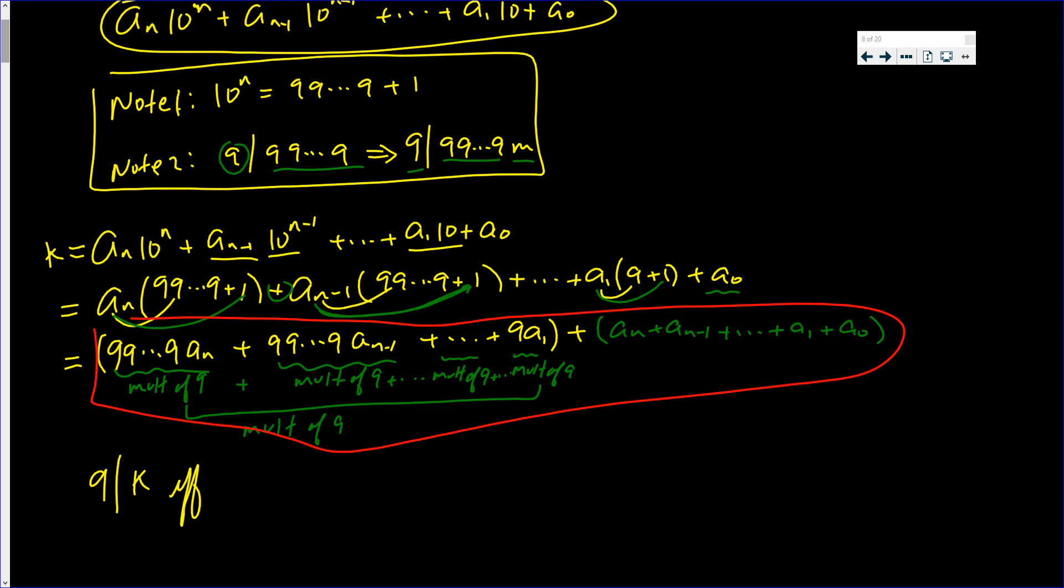So the only way 9 is going to divide the whole sum is if 9 divides that. If and only if 9 divides a_n plus a_(n-1) all the way down to a_1 plus a_0.